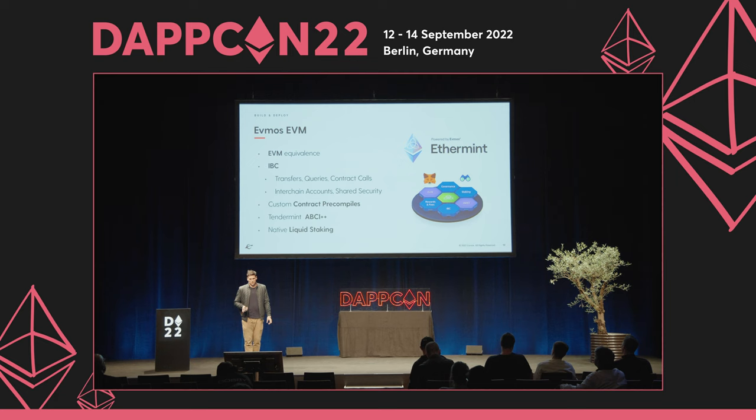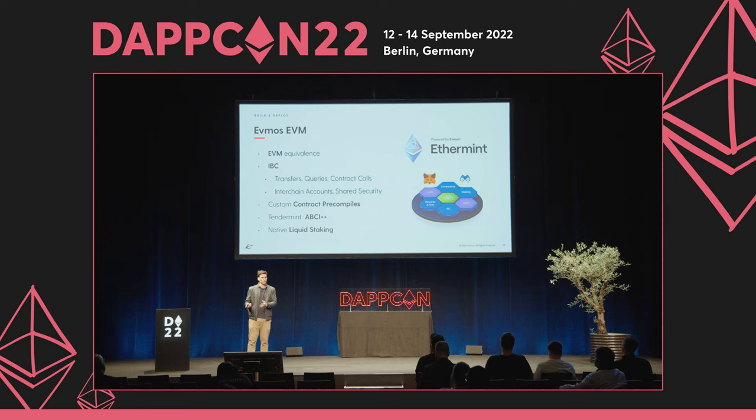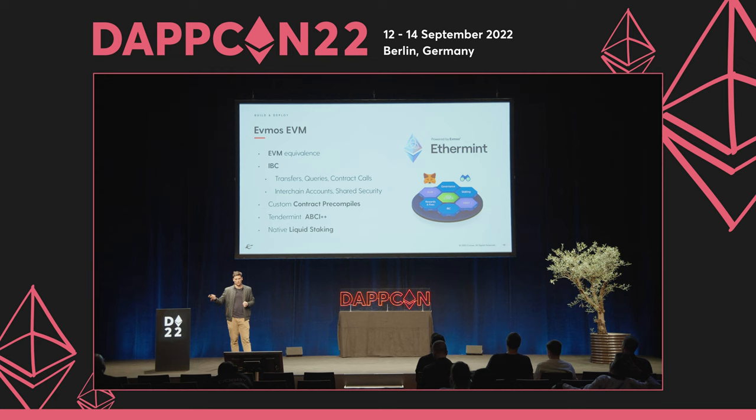The Evmos EVM provides full EVM equivalence and also IBC. Right now we support IBC transfers, but in the future other chains might be able to query decentralized application state — for example, if you deploy an oracle provider, other chains might use that oracle provider deployed on the Evmos EVM and return those queries into other application-specific blockchains on the Cosmos ecosystem. This also includes contract calls directly from other EVM and non-EVM environments, and interchain accounts.